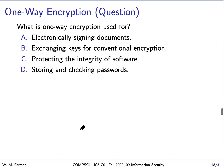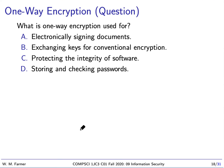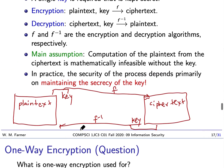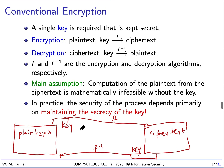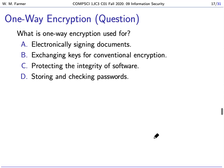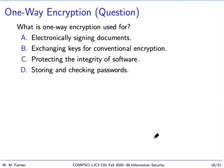Here's another question: what is one-way encryption used for? One-way encryption is similar to conventional encryption, but there is no key and you cannot go backwards. You can encrypt plain text to produce ciphertext, but there is no algorithm to reverse it, and it is mathematically infeasible to produce the plain text from the ciphertext. So what is this generally used for in computing?